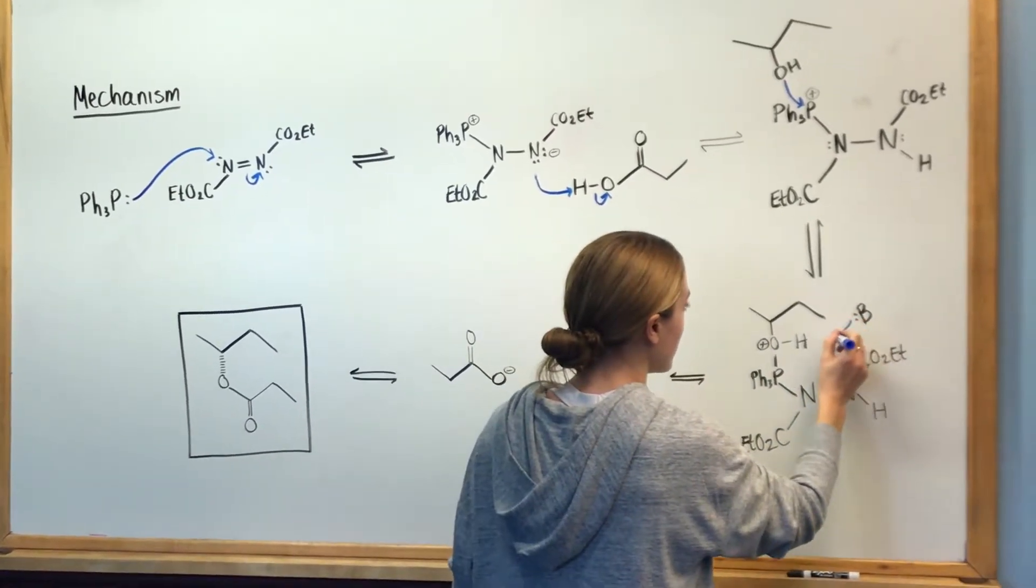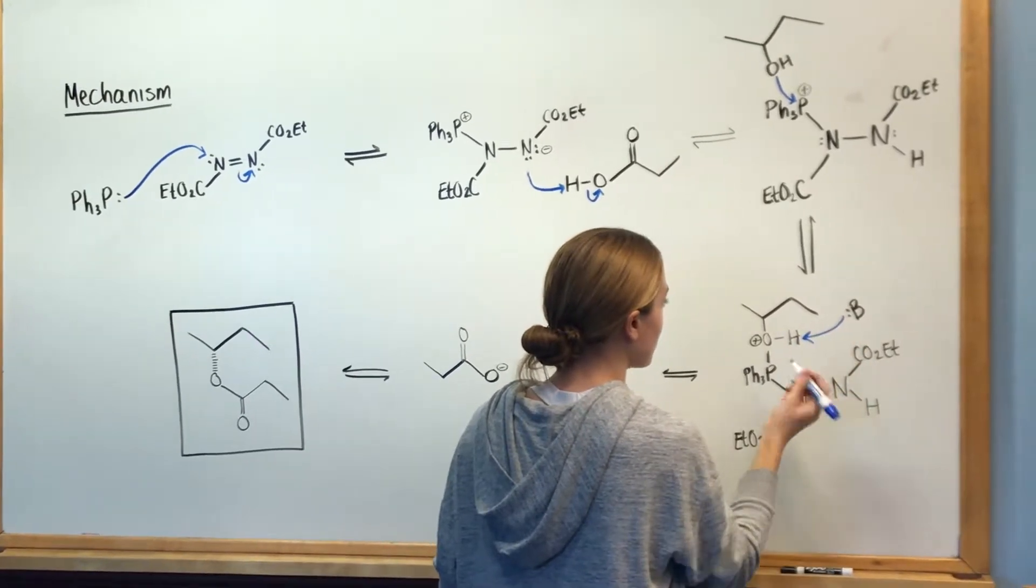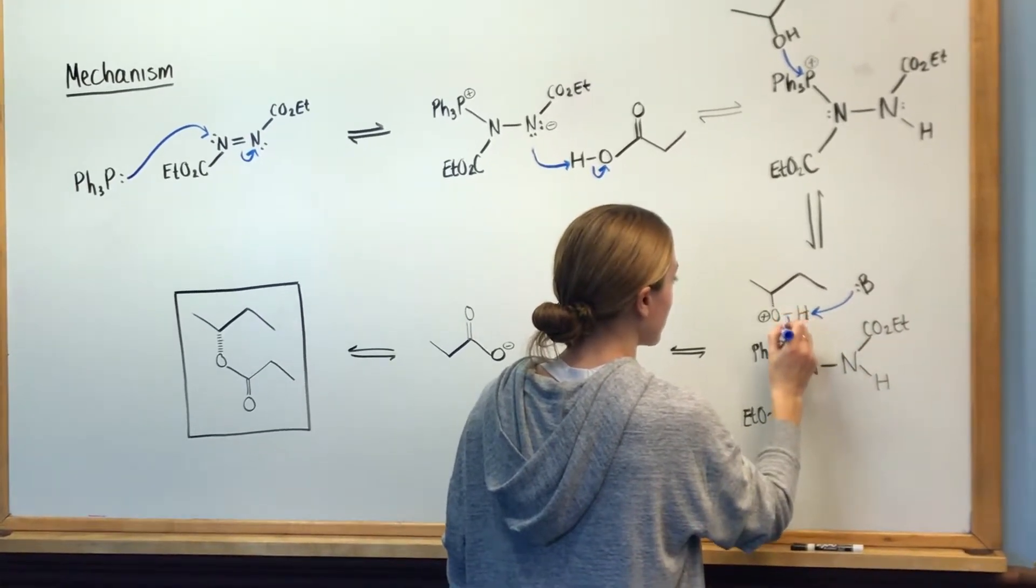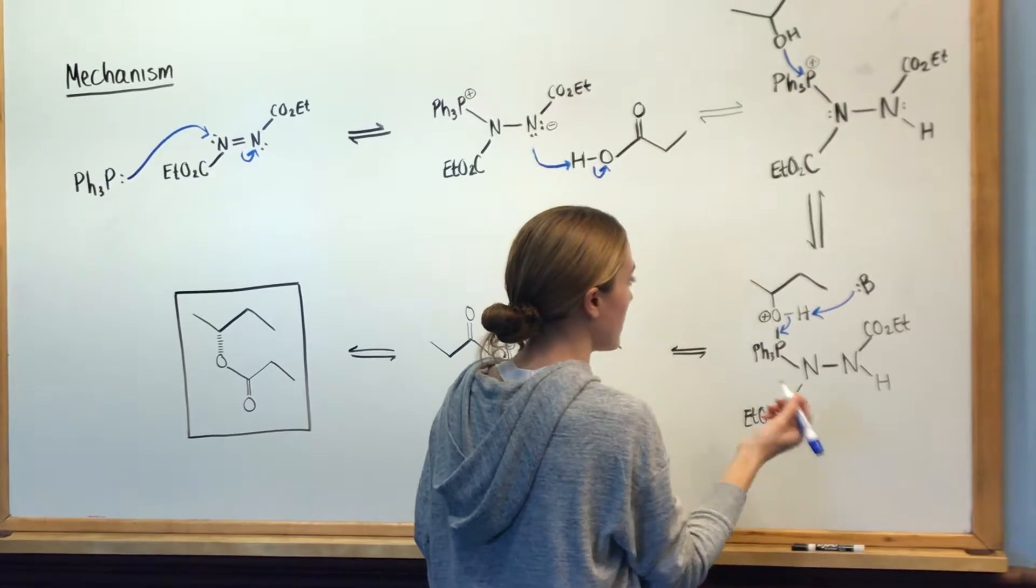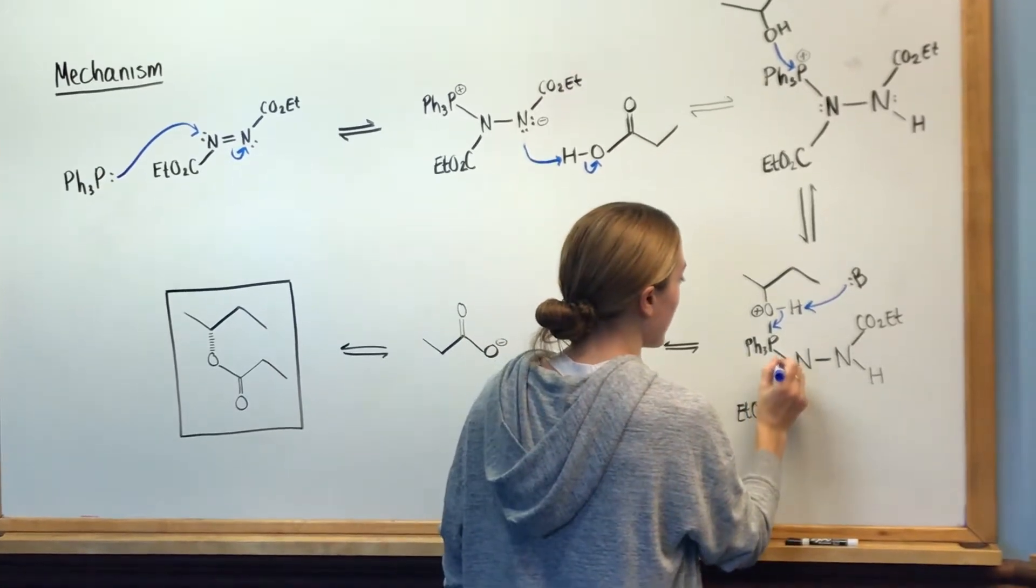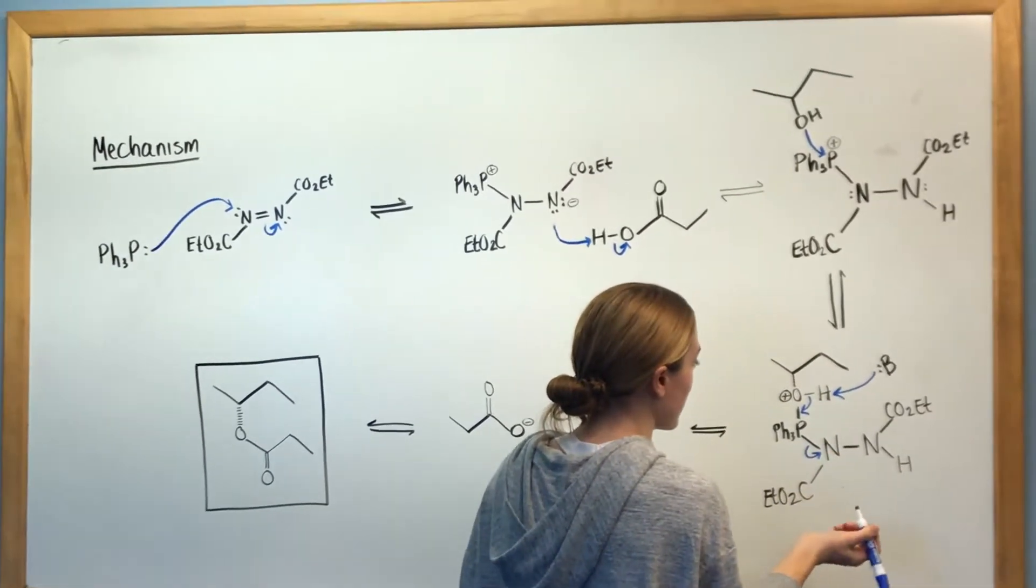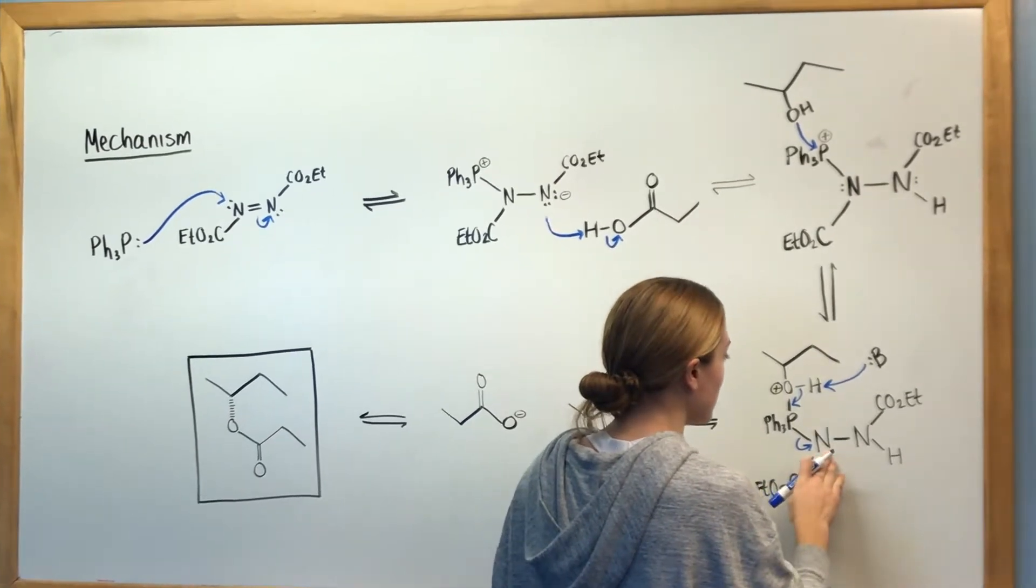A base in the solution is going to come over here and grab this proton. These electrons are going to come make a double bond between oxygen and phosphorus, and the rest of the DEAD is going to leave. That's going to leave this nitrogen negative.